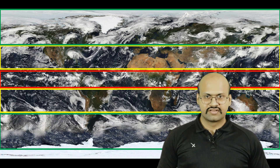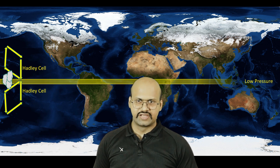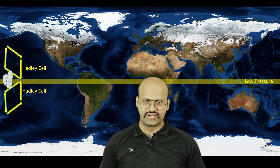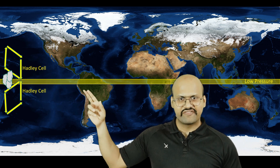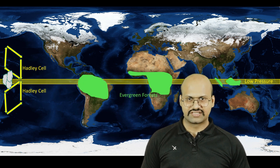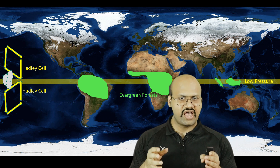Now let's see how the wind cells affect the climate of a region. In the Hadley cell, air rises over the equatorial region, forms clouds, and creates a low pressure belt. Because the air is continuously rising throughout the year there is a lot of rainfall, and because of this rainfall we see evergreen forests in this region — we can see that on all continents lying in this belt there are evergreen forests.